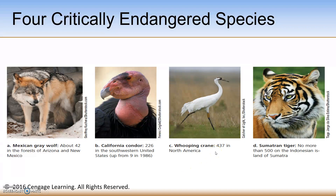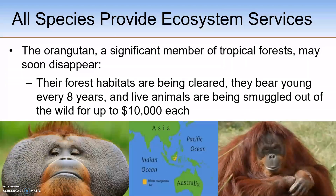The whooping crane has numbers as low as 437 birds in North America — a large geographical area for that small number. The Sumatran tiger has an estimated no more than 500 left in Indonesia on the island of Sumatra. A century ago there were probably more than 230,000 orangutans in total, but the Bornean orangutan is now estimated at about 104,000 based on updated geographic range. The Sumatran orangutan is about 7,500 individuals and is considered critically endangered.